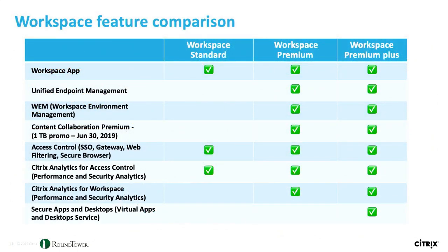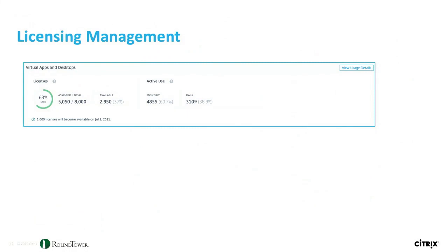Workspace Standard is just the control plane for access control — very simple, very single sign-on, Okta-like. Workspace Premium extends that and gives you endpoint management and content collaboration, a.k.a. ShareFile. So we go from just single sign-on, a single URL for web apps and SaaS, to full content and collaboration management. The one thing I really like about Citrix Cloud is the license management they have provided. This is a screenshot of the Citrix control plane where you look at licensing utilization.